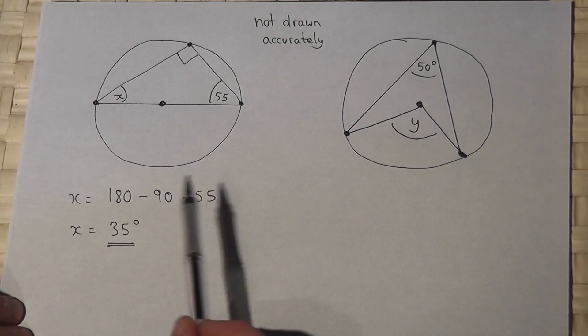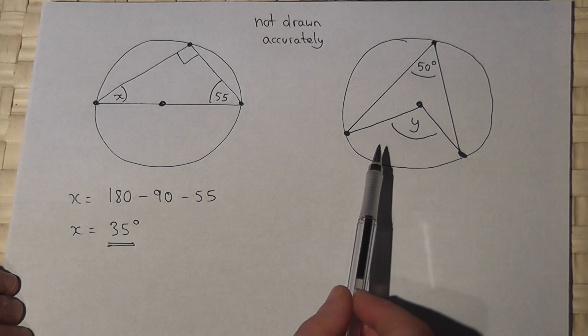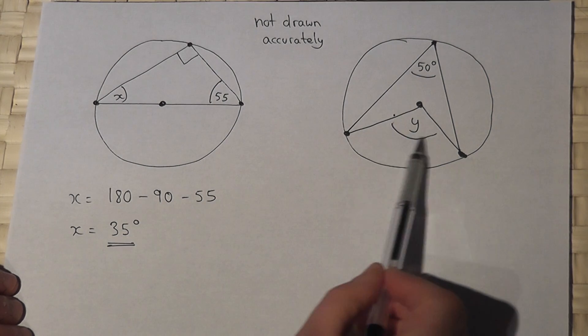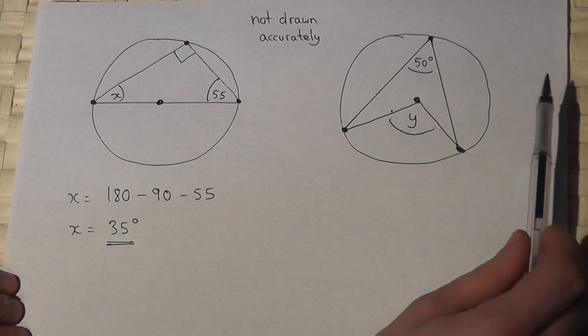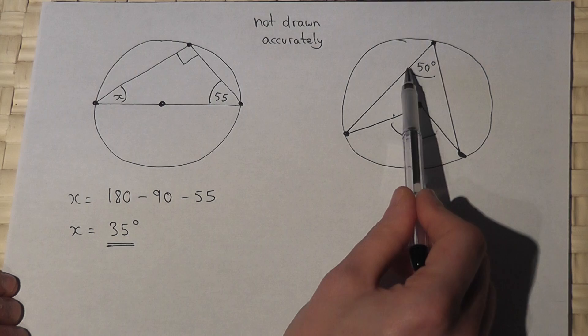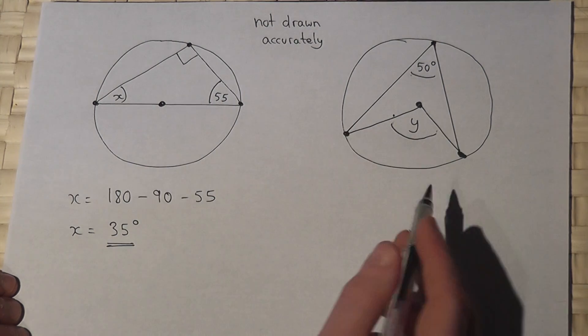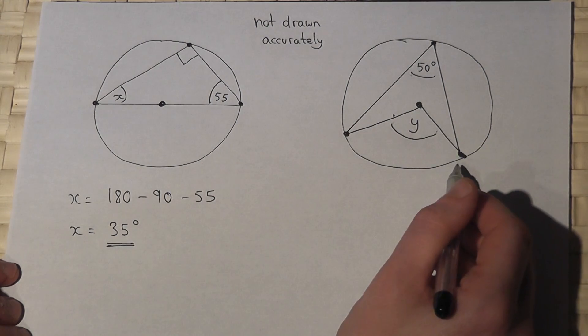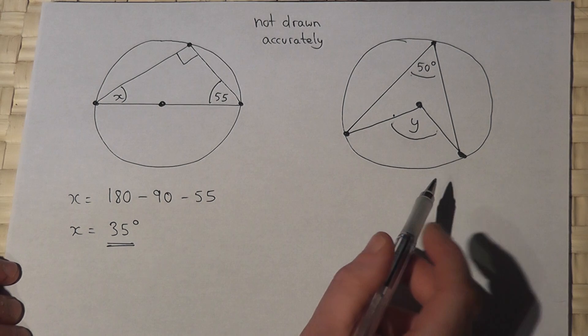The second one which this video reviews is where we have an angle at the centre and an angle at the circumference of the circle. Now then, this angle is clearly larger than that one, and the key rule here is that the angle at the centre is always double the angle at the circumference.